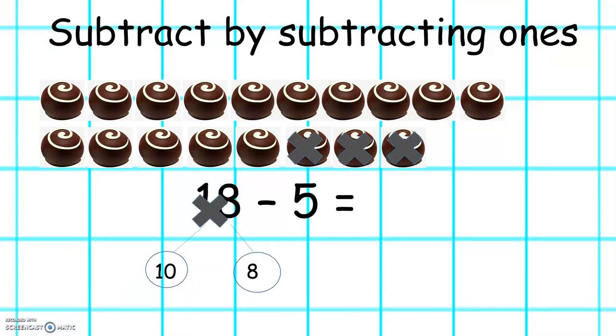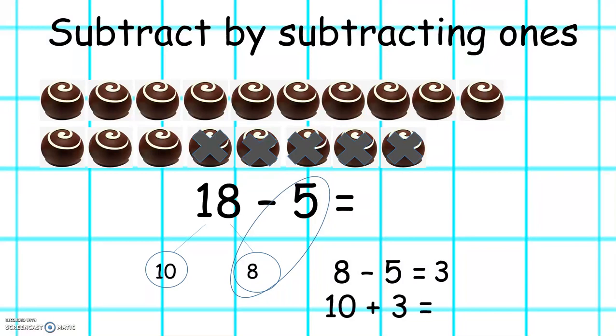1, 2, 3, 4, 5. And then we're going to subtract the ones. 8 take away 5 equals 3. 10 plus 3 equals 13. So 18 take away 5 equals 13.